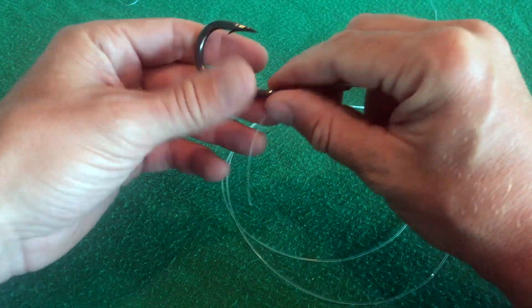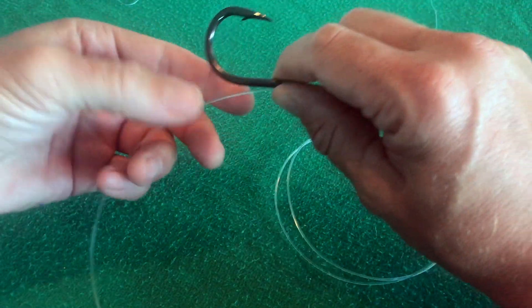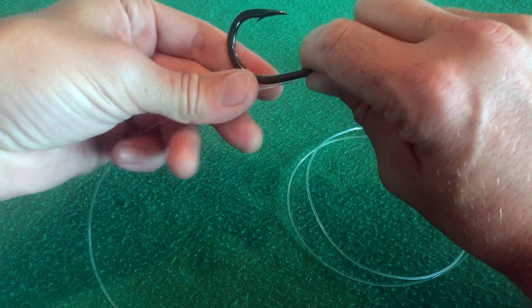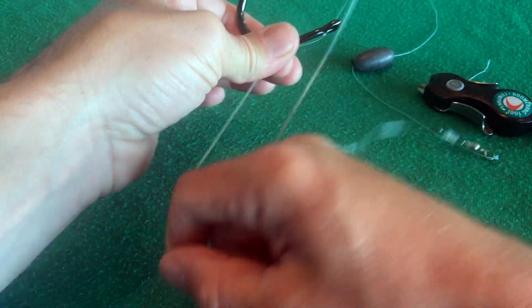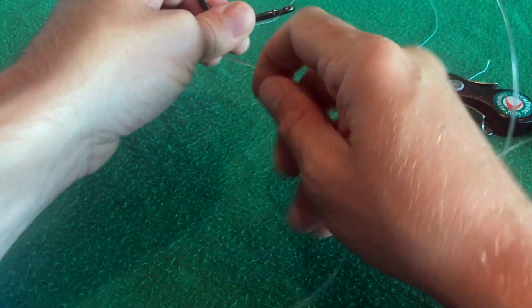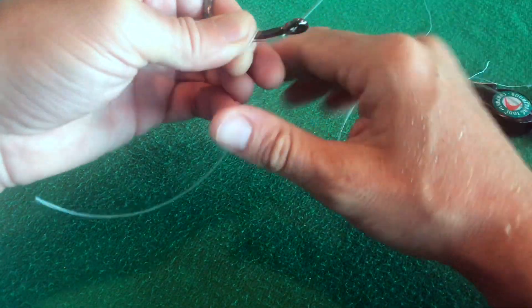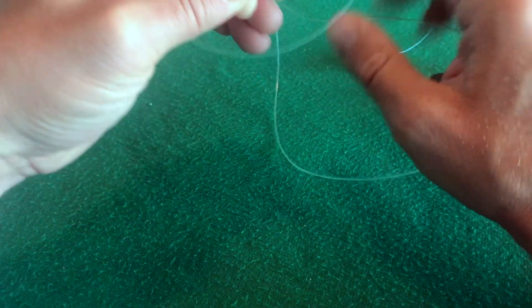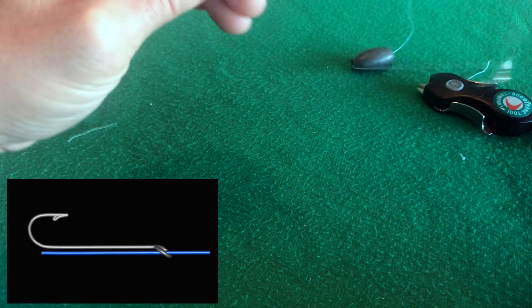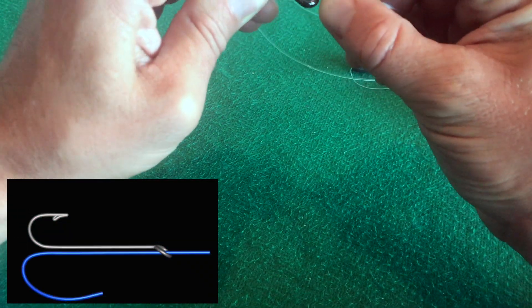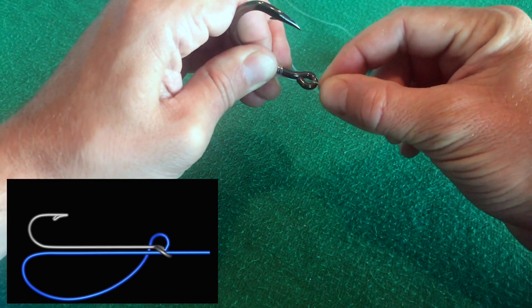Now, I like to tie the simple snell for this rig. And it is a simple knot to learn. And it ties up pretty quick, especially when you get broke off or something. You've got to tie it up again real quick. And remember, I like the simple snell, or any snell, because it doesn't allow that knot to move around on the hook shank.